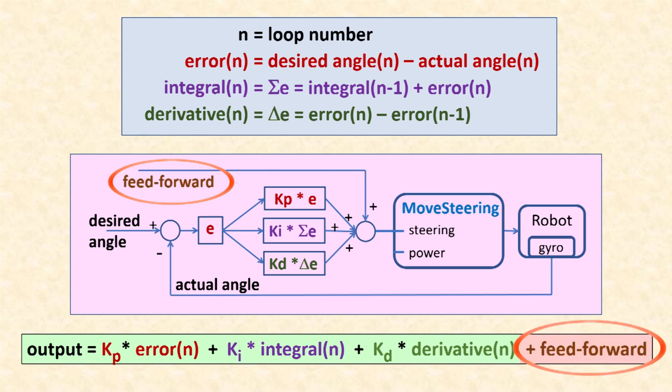Feed forward is a fourth part of PID where a feed forward control value is added to the PID output. With feed forward, there's a steering control value right from the start, which we use to make the robot go straight right from the start.